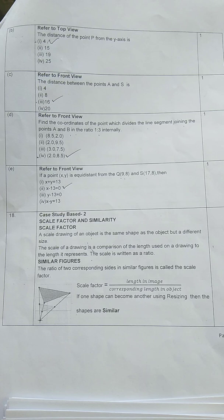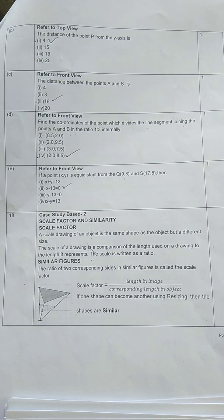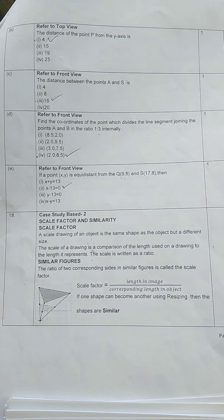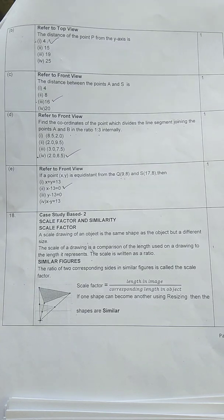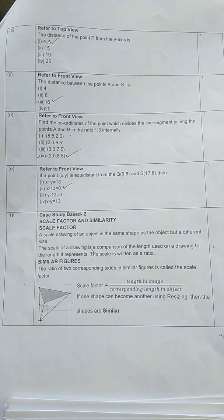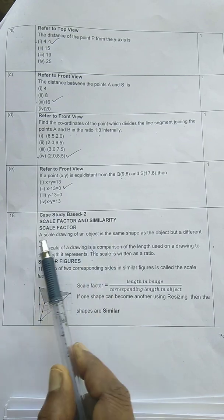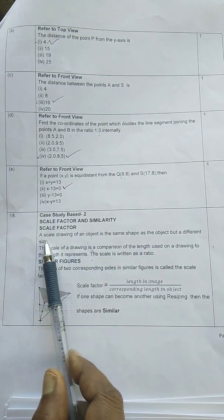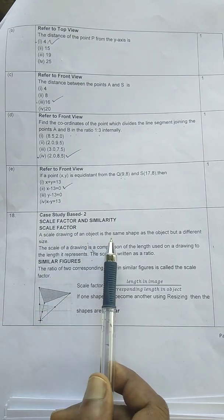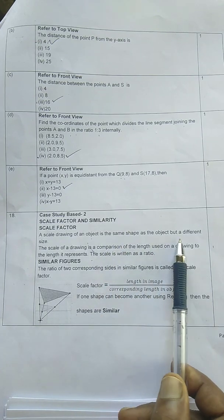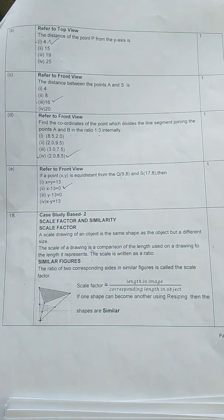The question will explain scale factor and similarity. Similar figures already have two figures if they have the same shape but different size. A scale drawing of an object is the same shape as the object but a different size.